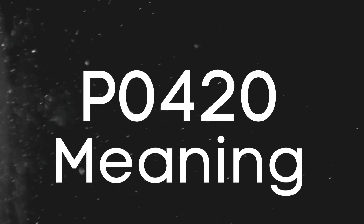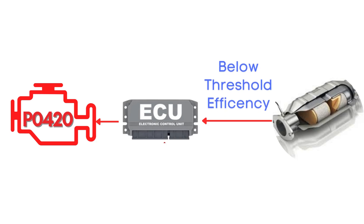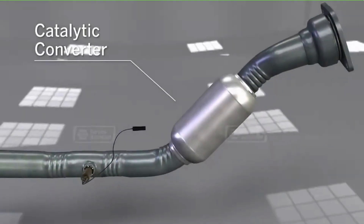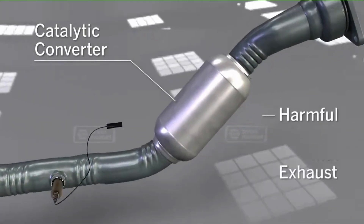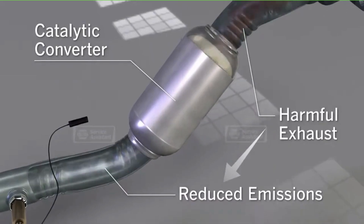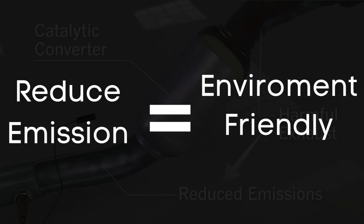First things first, let's break down what the P0420 code actually is. This code gets triggered when the engine control module detects a condition indicating that the catalytic converter is operating below the minimum allowable efficiency threshold. The purpose of a catalytic converter is to use a chamber called a catalyst to change the harmful compounds from an engine's emissions into environmentally safe gases.